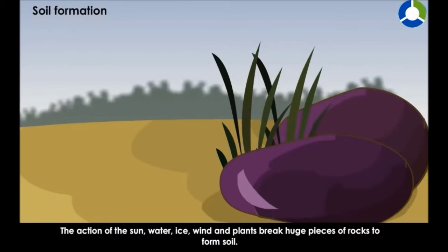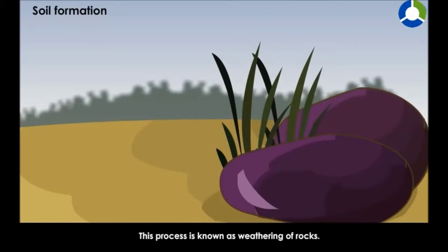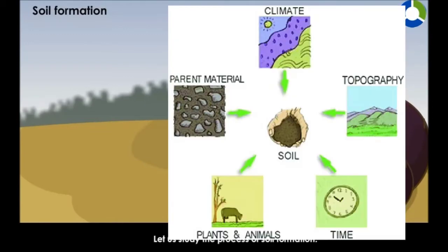Soil takes thousands of years to form. Soil is formed by physical, chemical, or biological changes that take place in a rock. There are several factors responsible for soil formation: parent rock material, relief, time, climatic condition, plants, animals, and human activities.